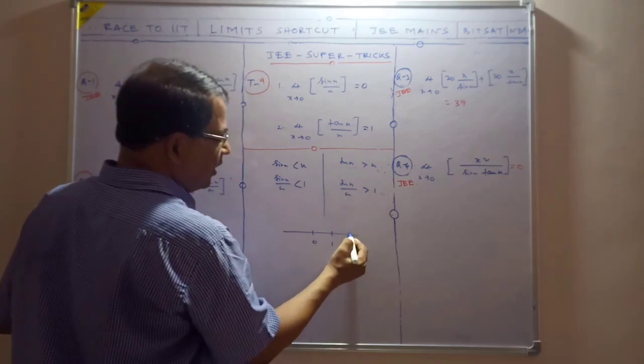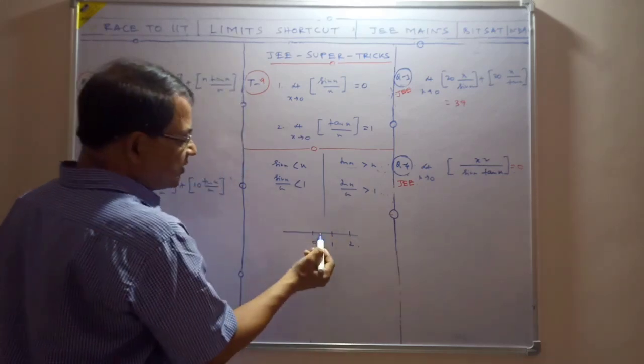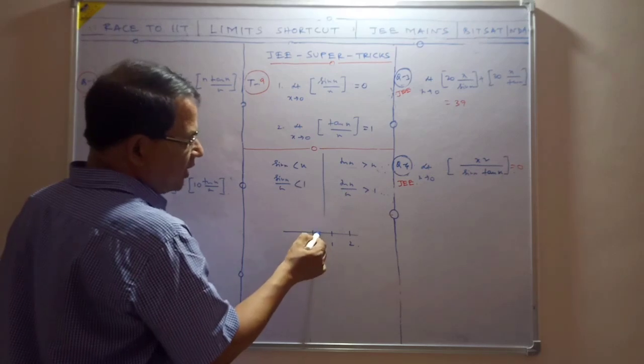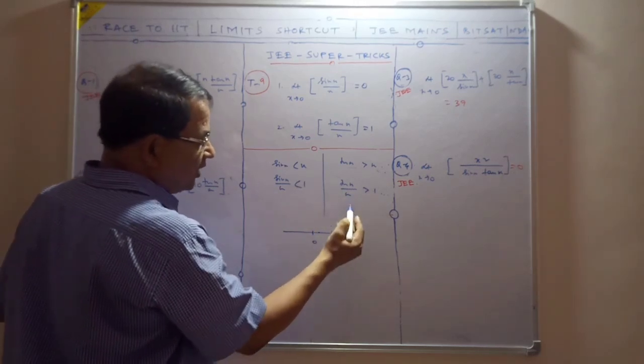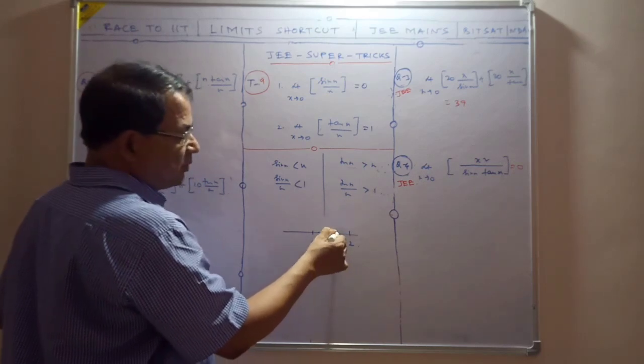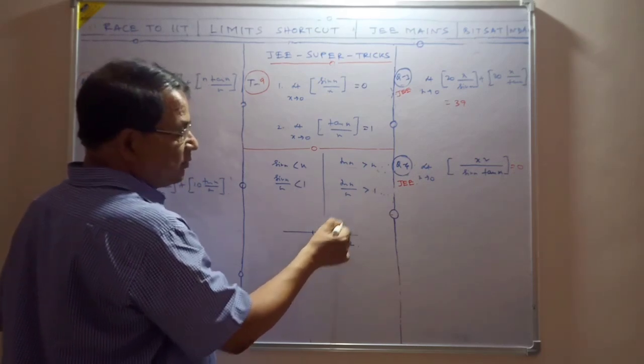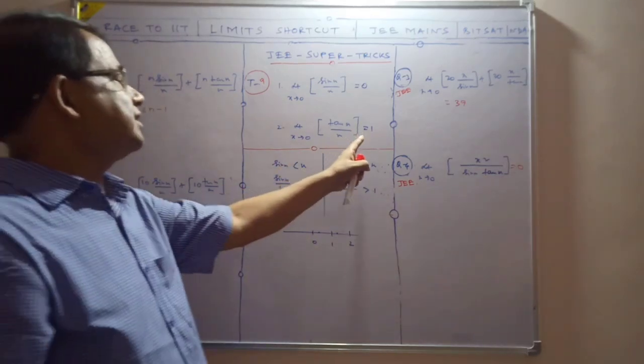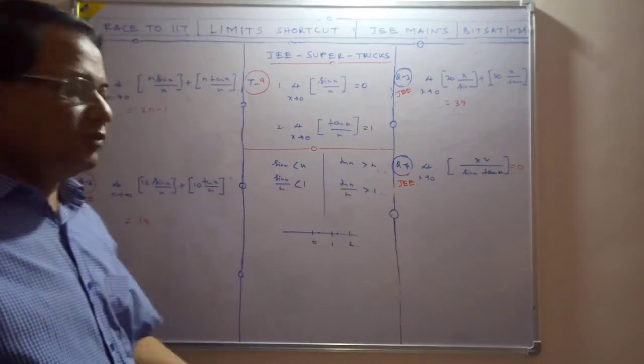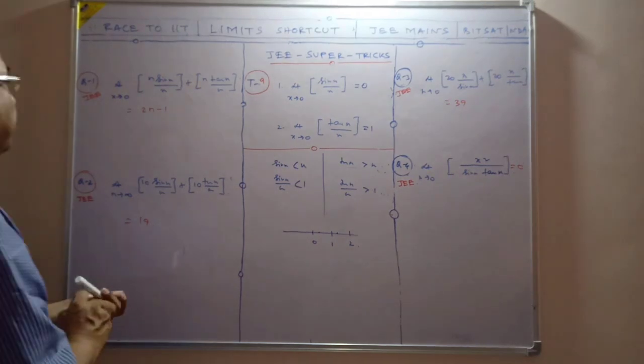Suppose this is zero, this is one, and this is two. The sin x value is here, less than one, so its greatest integer value will be zero. Suppose tan x/x has this value—its greatest integer function value will be one. This is its limiting value: one is the limiting value.